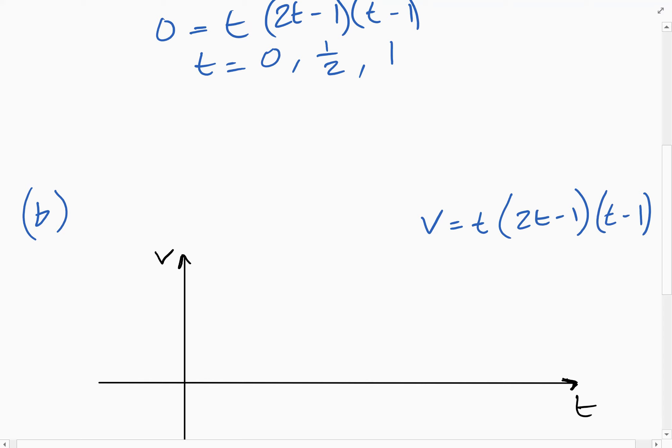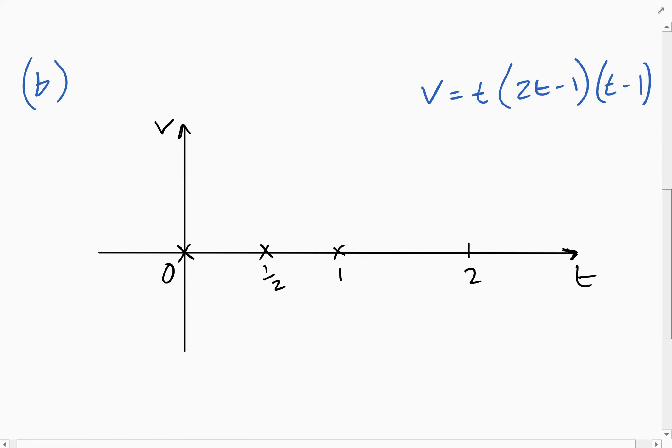So it's going to go through at zero, half, and one. And we're interested in, I shouldn't have put a cross there, because it doesn't actually go through at two, but we're interested in the displacement between zero and two seconds. So if we sketch this cubic equation, it's going to look something like this. It's going to start down here, go up, go down, and then up like this.